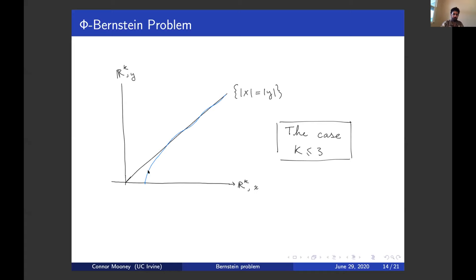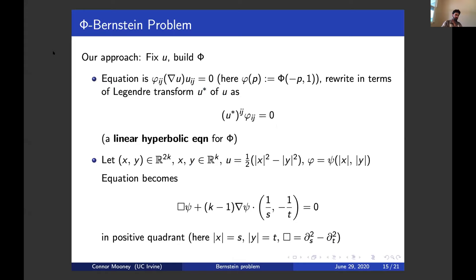Now we'll talk about the approach to the main theorem of constructing a global solution in six dimensions to an equation of minimal surface type. The approach is massively different — we'll basically forget everything we know about elliptic equations for a little bit, because the approach enters the realm of hyperbolic PDE. The philosophy is to build counter examples by fixing a candidate for the solution, then building the integrand phi. We'll fix the solution U — what we hope is the solution — and build the integrand phi. This is sort of like an inverse problem, which changes the problem from elliptic to hyperbolic.